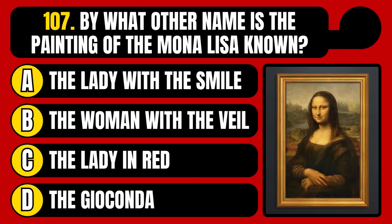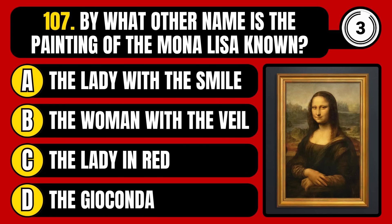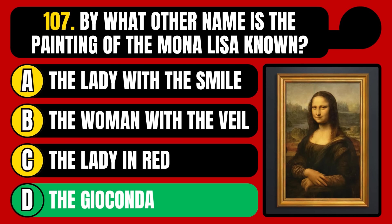By what other name is the painting of the Mona Lisa known? The lady with the smile, the woman with the veil, the lady in red, or the Gioconda? The correct answer is option D, the Gioconda.